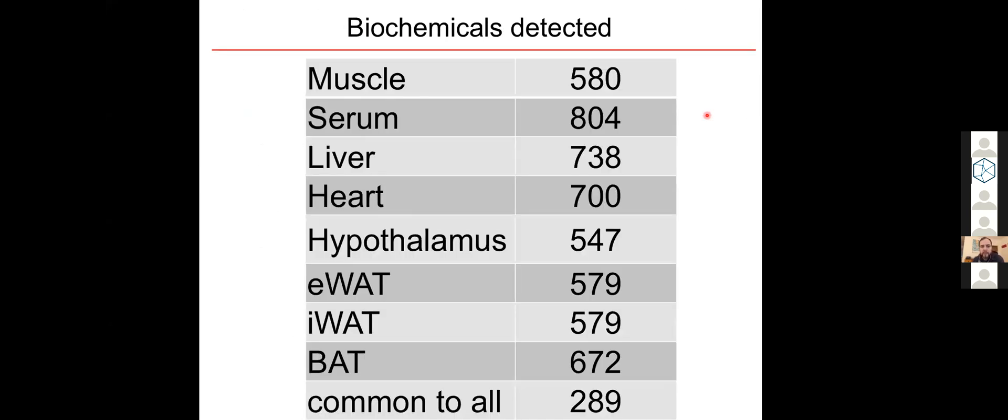We obtained a pretty decent coverage of metabolites across a wide range of metabolic pathways, detecting between 500 to 800 metabolites of known biochemical identity in each tissue, with 289 that were common in all of the tissues.